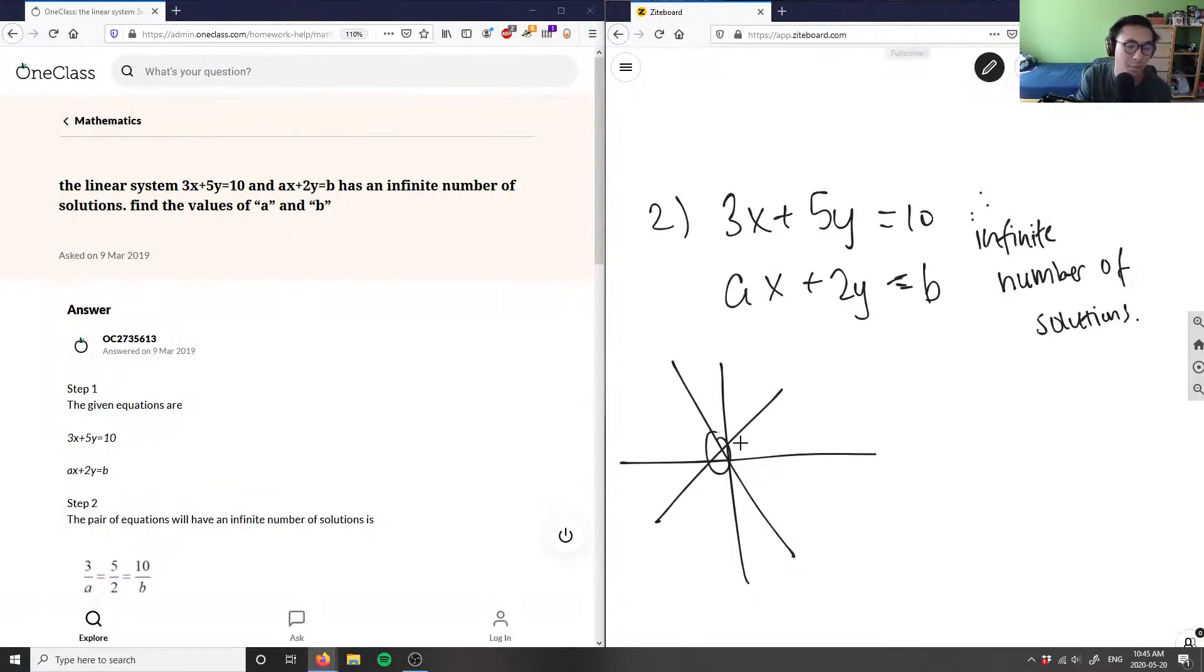This is a point of intersection, so there's one unique solution. Whenever there's an infinite number of solutions, I'm talking about one line and another line right on top of each other, which gives an infinite amount of solutions. So how do we figure out this is going to give infinite solutions?